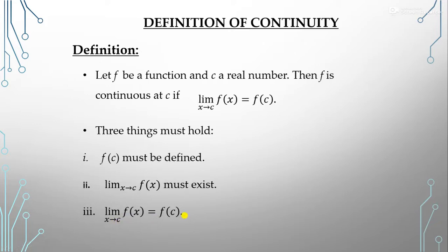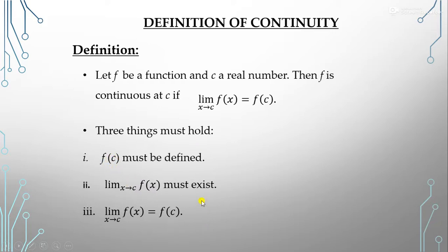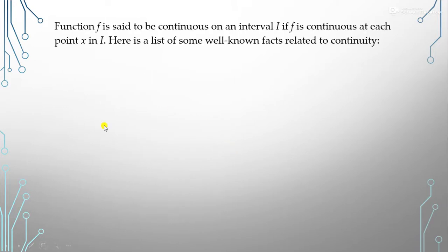Third, the limit as x tends to c of f(x) must equal f(c). All three conditions must hold for the function to be continuous at x = c. If even one of these three conditions is not satisfied, you cannot say that your function is continuous.